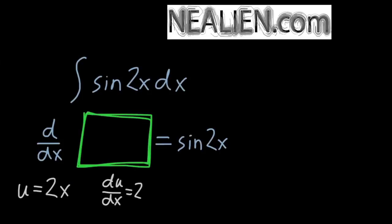Therefore du/dx is 2. If we bring the dx over to the right side, we find that du equals 2 dx. And if we do some algebra, we find that du over 2 equals dx. Now we're going to substitute back into the original integral using the letter u instead of the letter x. So before we had an x in the function and a dx for the differential. Now we want u in the function and du for the differential.